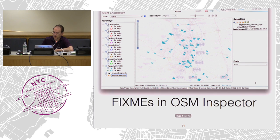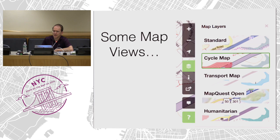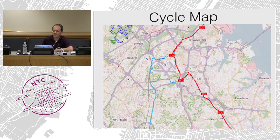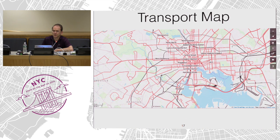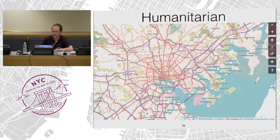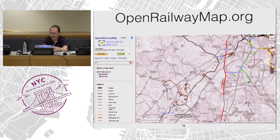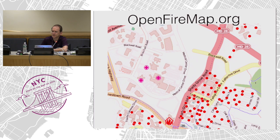Here's some fix me's in OpenStreetMap Inspector. Another way to find errors is simple map views. There's the standard map, but also the cycle map — if you look closely, there's a gap in the cyan route. There's transport map for buses and rail, humanitarian which is mostly infrastructure like roads and buildings, open railway map which dims the underlying data to gray and pops out the railroads, and OpenFireMap which has fire hydrants, fire stations, and hospitals for EMS types.